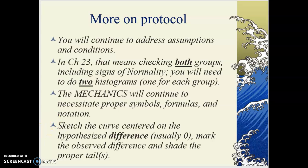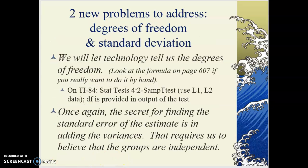You always want to sketch a normal or t-distribution shaped curve centered on the hypothesized difference — usually at zero, since you're typically trying to show that two means are the same, or rather that the hypothesis is that they are. Then mark your observed difference from your study and shade the proper tail, whether it's the upper or lower side. We have two new things to address: degrees of freedom and standard deviation.